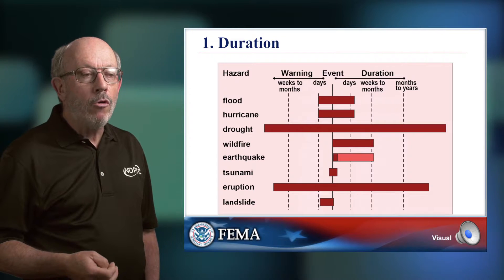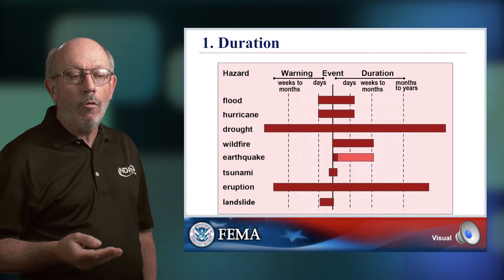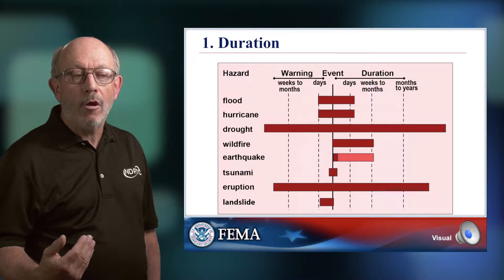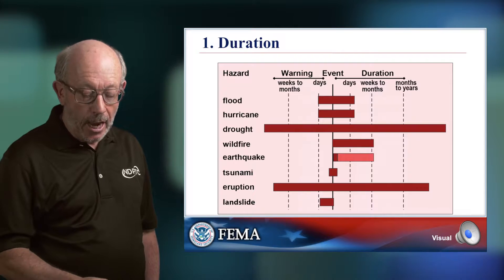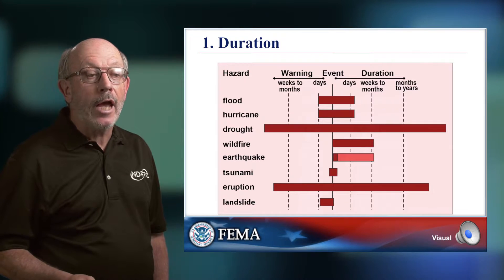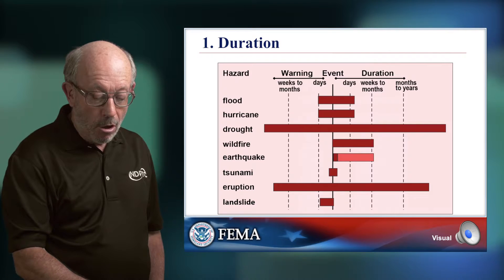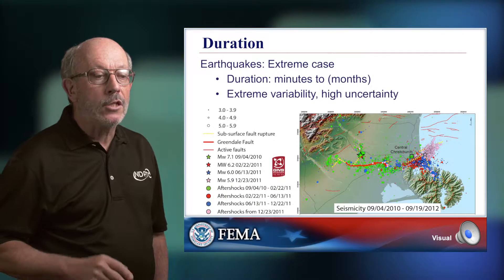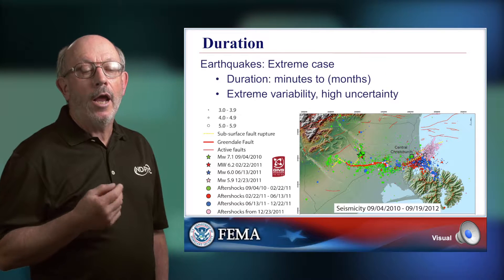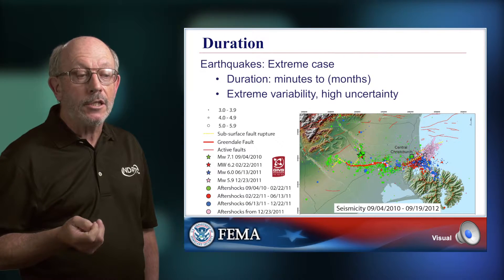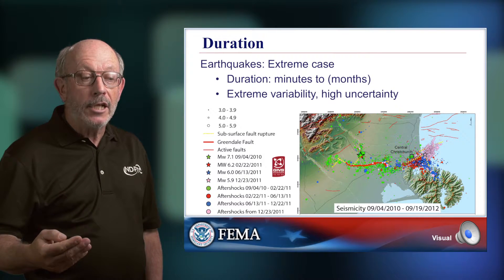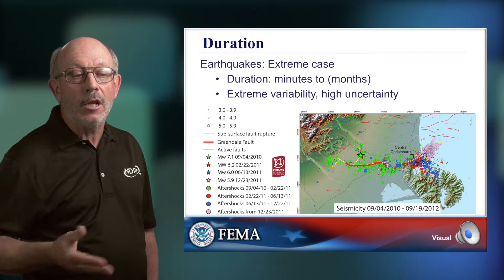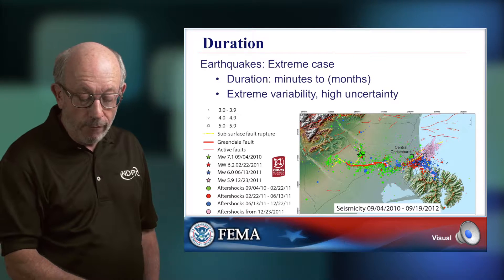There are events which have no warning time at all, and events with very long, prolonged warning times — which are times of uncertainty. The duration of events can be as long as decades or as short as minutes. One of the more complicated examples are earthquakes. Individually they last seconds to tens of seconds, but they occur in swarms. Swarms can last months, and they contribute a variability and uncertainty which is very hard to deal with.